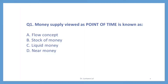Question number 1. Money supply viewed as a point of time is known as. There are 4 options given here. First, flow concept. Second, stock of money. Third, liquid money. Fourth, near money. So what will be the correct option here?